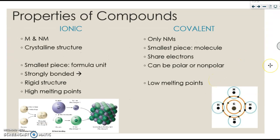Let's start by discussing some common properties of compounds. Ionic compounds are composed of metals and nonmetals. They have what is known as a crystalline structure, which means that they have a regular repeating pattern.